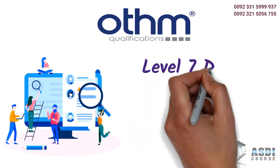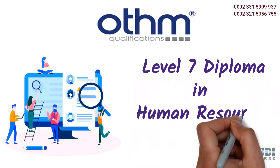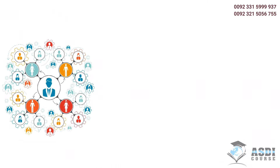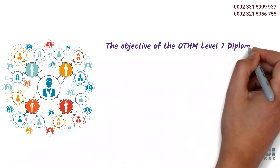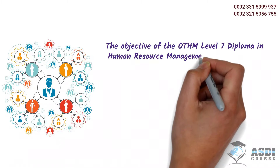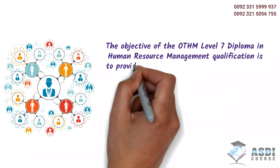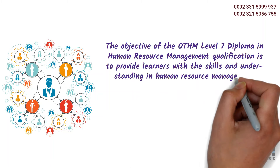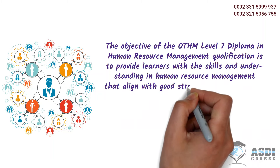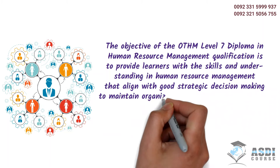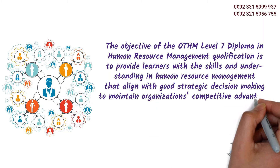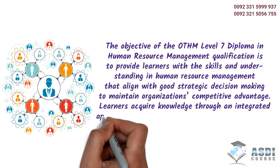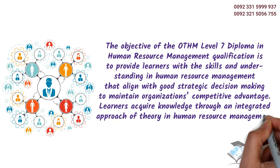OTHM Level 7 Diploma in Human Resource Management. The objective of this qualification is to provide learners with the skills and understanding in human resource management that align with good strategic decision-making to maintain organizations' competitive advantage. Learners acquire knowledge through an integrated approach of theory in human resource management and practice using real-time activities.